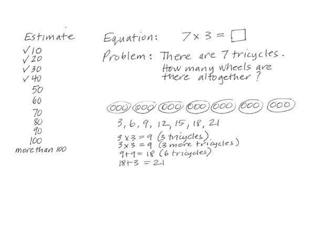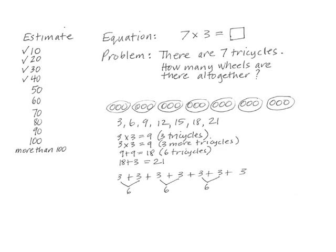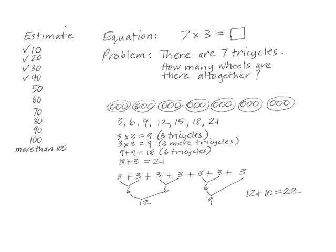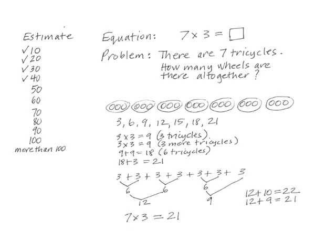Lydia went next. 'You can add three seven times,' she said. I recorded and asked how she would do the adding. Lydia explained: first she added pairs of threes, then added the first two sixes, then six plus the remaining three. I recorded. 'Now I have to add twelve plus nine,' she said, 'but that's hard.' 'Can you add twelve plus ten?' I asked. 'It's twenty-two,' she answered quickly. 'Oh yeah, that helps — twelve plus nine has to be twenty-one.' Under all of the recording, I wrote seven times three equals twenty-one, and then reviewed the methods they had come up with.